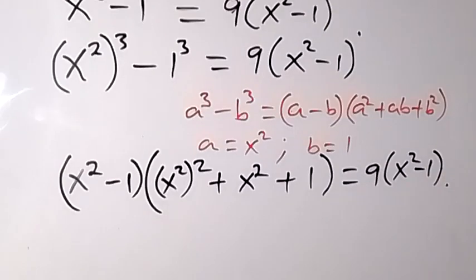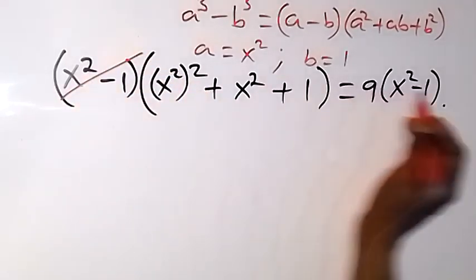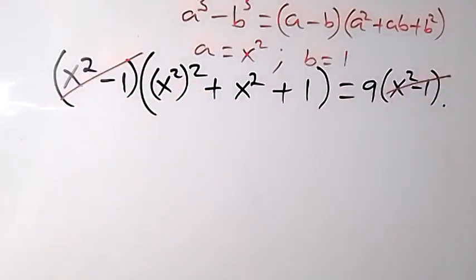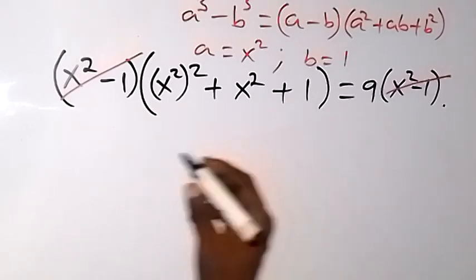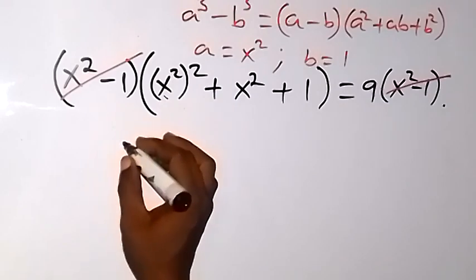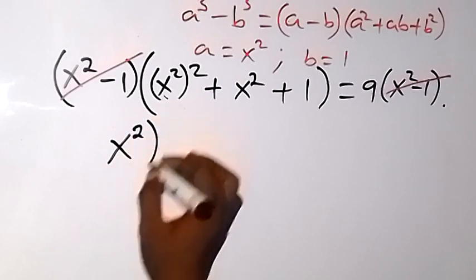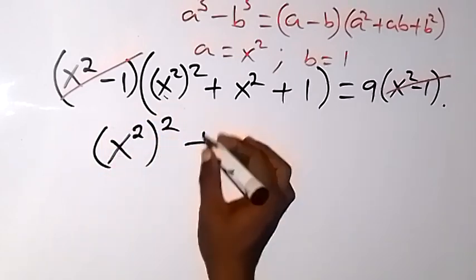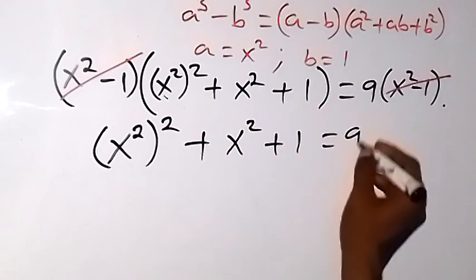From here, x squared minus 1 cancels on both sides when we divide through, and we are left with the bracket equals 9. When we simplify this, we have x raised to power 4 plus x squared plus 1, equals 9.